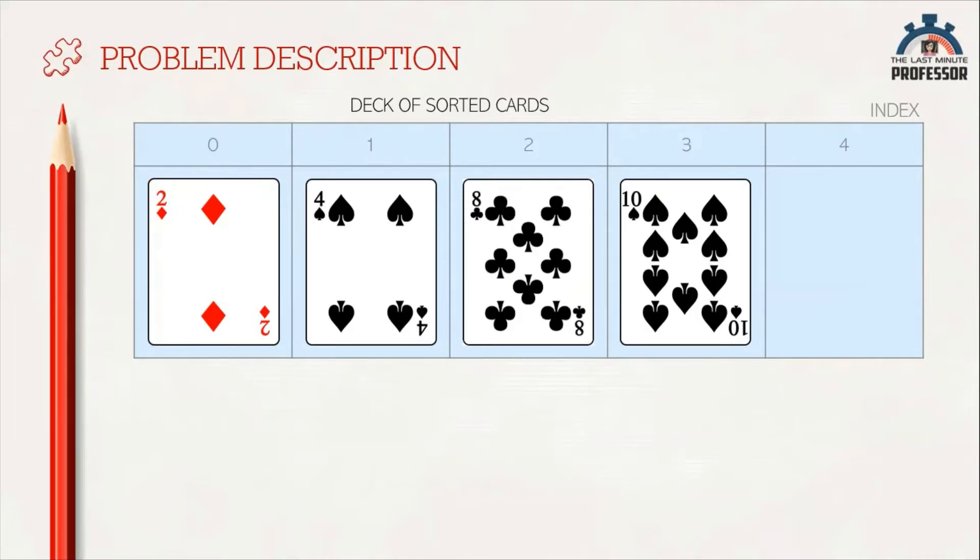For example, here we have four cards arranged in ascending order: 2, 4, 8, and 10. The variable name is 'cards'. To point out a specific value, we use index which varies from 0 to 3 in this case.